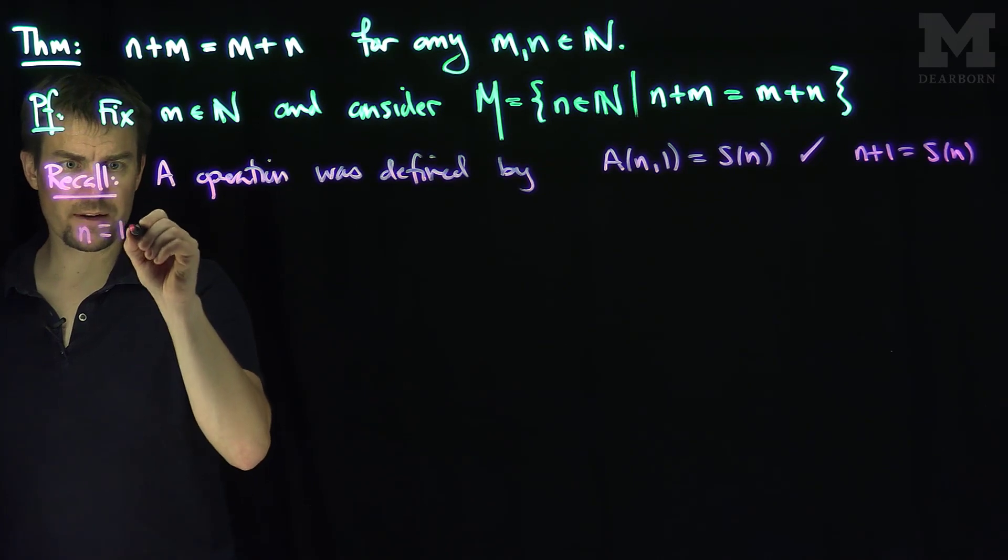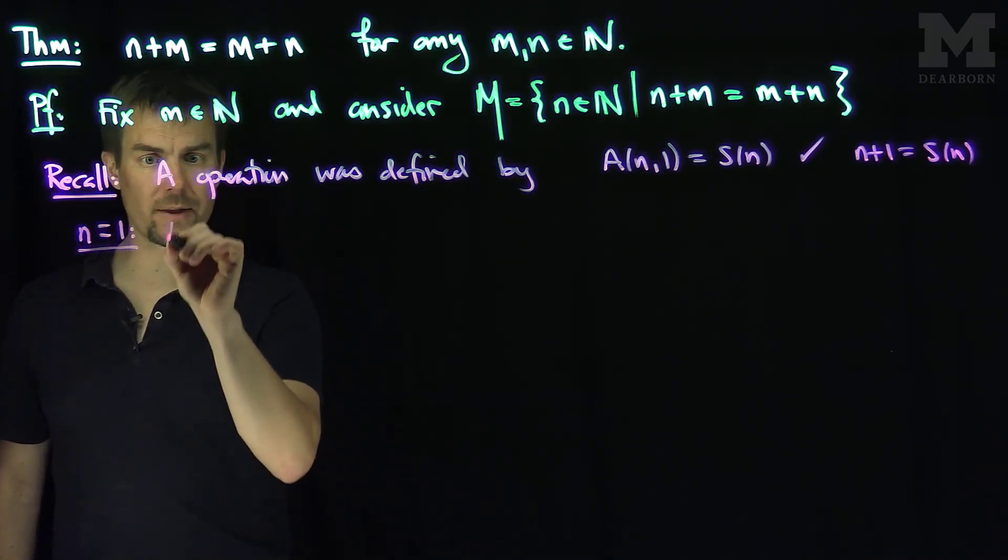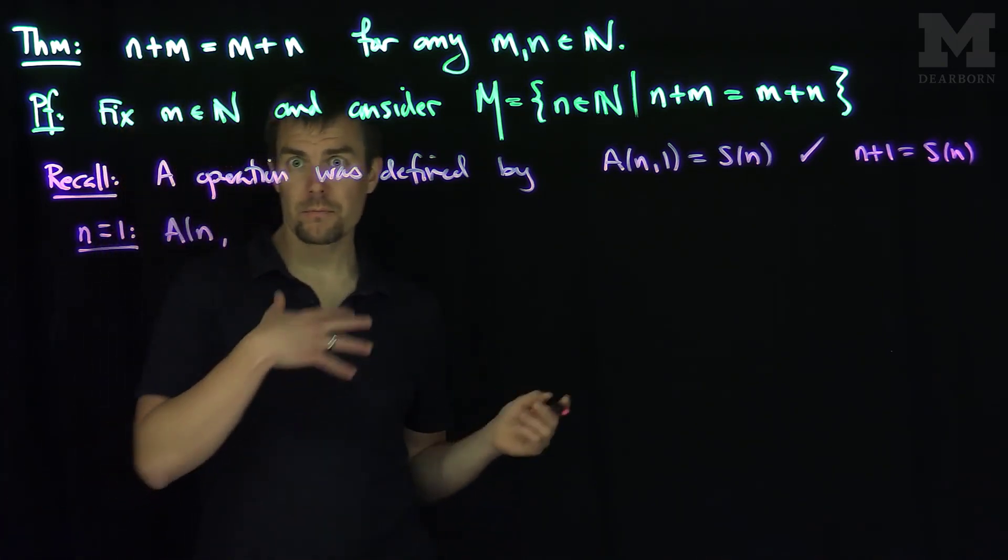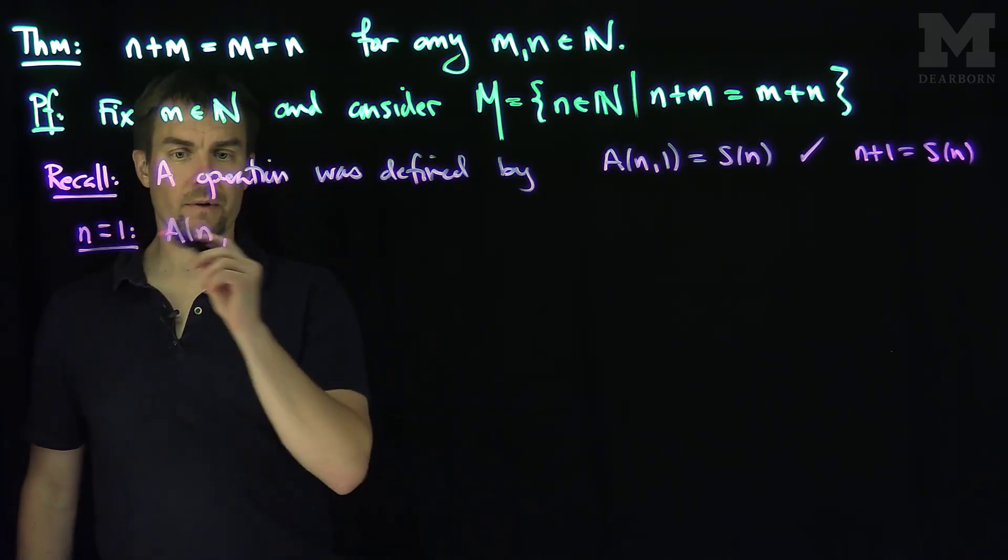We also had, when n was equal to 1, how did we define addition? Addition was defined uniquely by this relationship that A of n in any value, m or k or whatever.